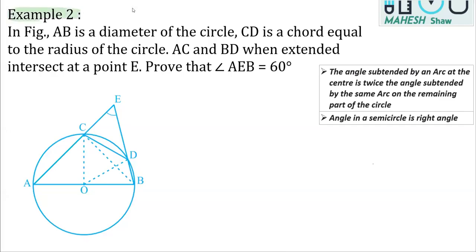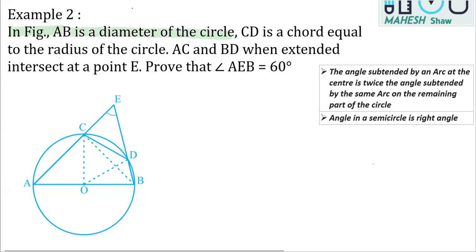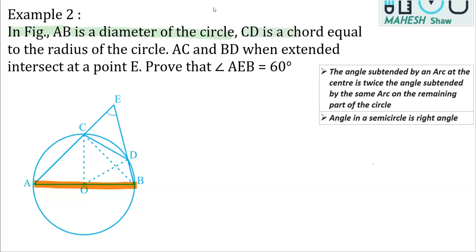We're going to do example number two from the textbook. In this question, there is a figure given and AB is the diameter of the circle. CD is a chord which is equal to the radius of the circle.